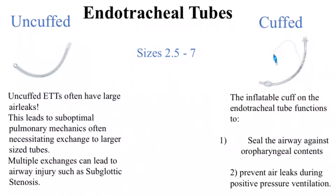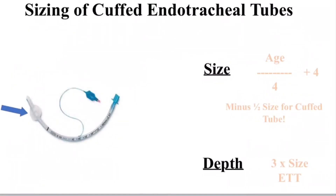There are two types of endotracheal tubes most commonly used: the cuffed and the uncuffed endotracheal tube. Sizes range from 2.5 through 7 millimeters internal diameter. A quick formula to size an endotracheal tube: for an uncuffed tube, we generally consider age divided by four, plus four.